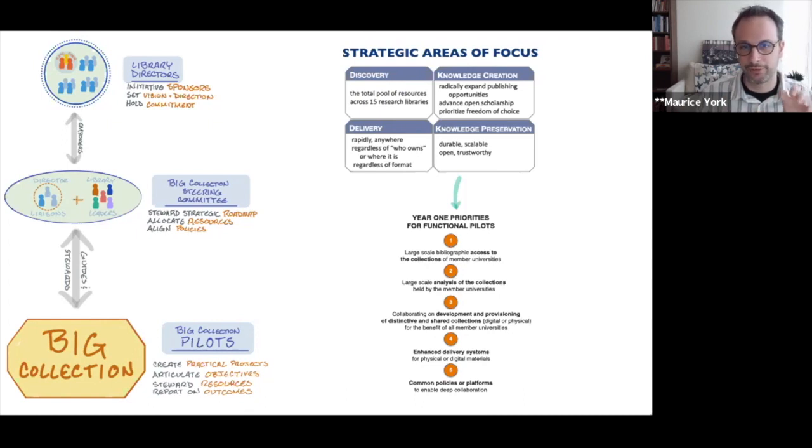This is creating a knowledge commons for the Big Ten. What's the core? It's starting with the infrastructure. So those are four key areas of focus in these first couple of years. Discovery, which is the total pool of resources across all 15 research libraries. Delivery rapidly anywhere, regardless of who owns or where it is, regardless of the format that it's in. Knowledge creation, this is really the scholarly communication pillar, radically expanding publishing opportunities, advancing open scholarship and prioritizing freedom of choice. And then knowledge preservation as that fourth area of focus. Durable, scalable, open, and trustworthy. And on this are the year one priorities for the functional pilots that we'll create.